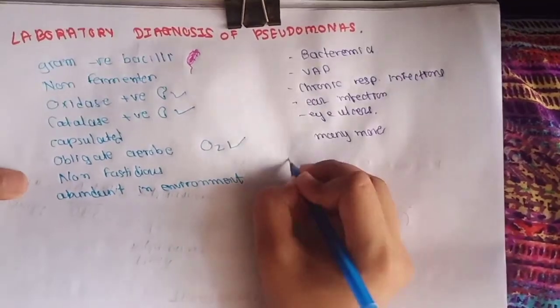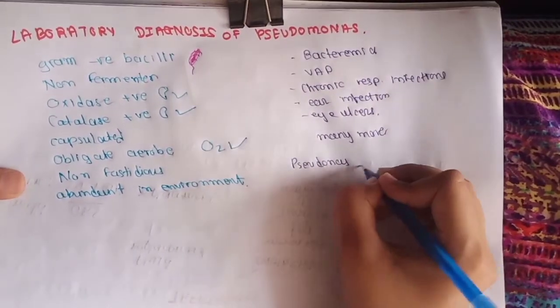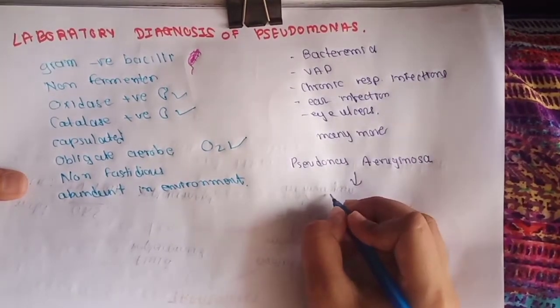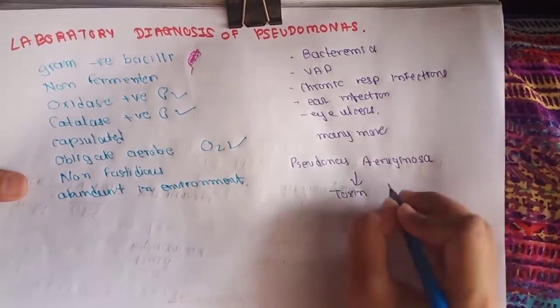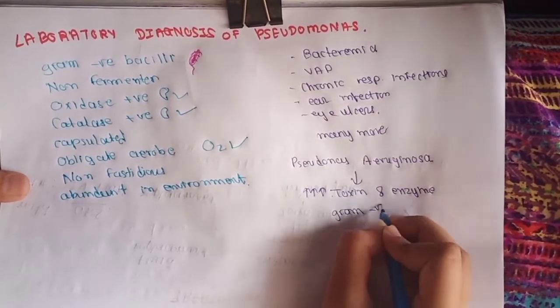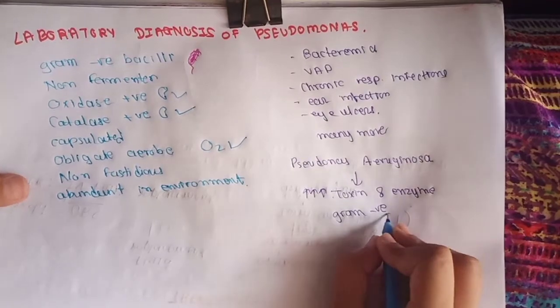Green nail syndrome and many more. Pseudomonas aeruginosa produces probably the largest number of toxins and enzymes, the largest number among all gram-negative bacteria.